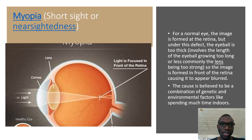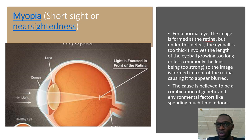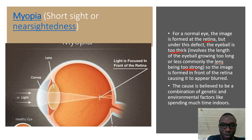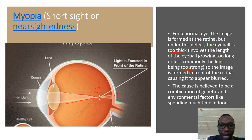Let's look at the first eye defect: myopia, which is the same as short sight or near-sightedness. As the name suggests, you can see clearly objects which are near you, but those which are far away you cannot see clearly. For a normal eye, the image has to be formed at the retina. But under this defect, the eyeball is too thick, or the lens is too strong. As we can see in the diagram, the lens converges the rays and the image is formed before the retina. That is the biggest problem — the image is formed before the retina.